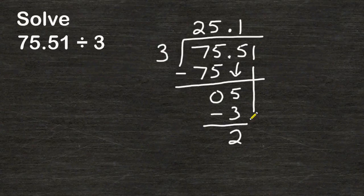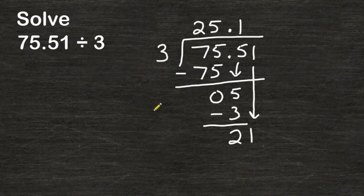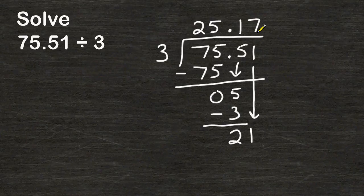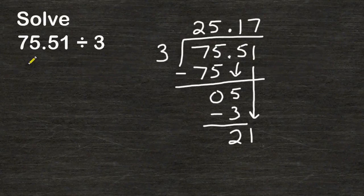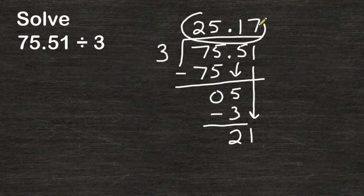We drop this 1 down next to the number 2 and that would give us 21 and 3 can be divided into 21 exactly 7 times. And we can multiply 7 times 3 and write 21 down here but we know that we are going to have nothing remaining so this is all the work I really need to show. So the problem 75 and 51 hundredths divided by 3 is a quotient of 25 and 17 hundredths.